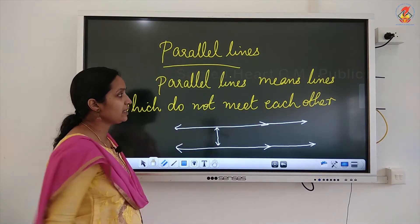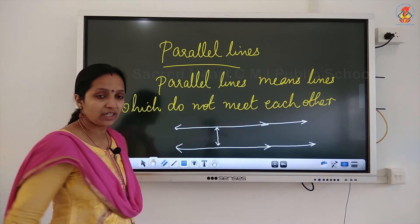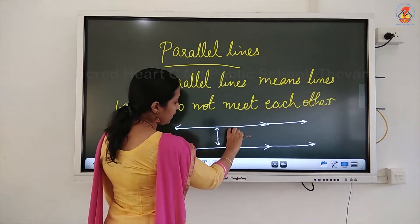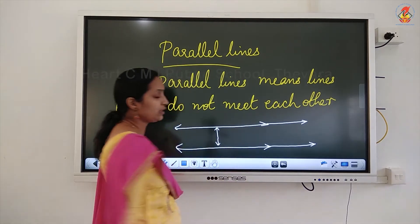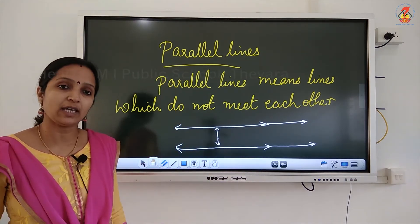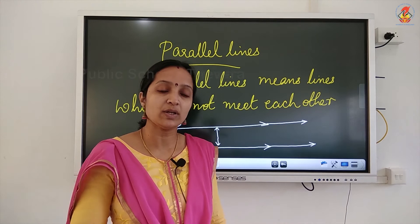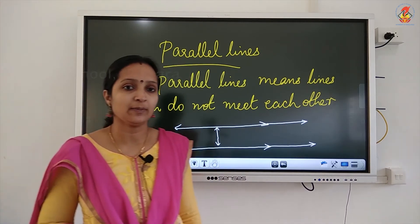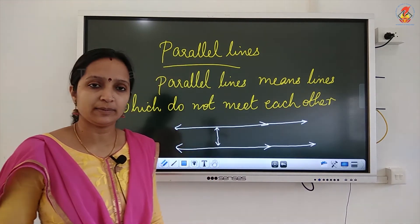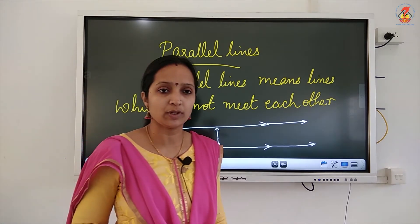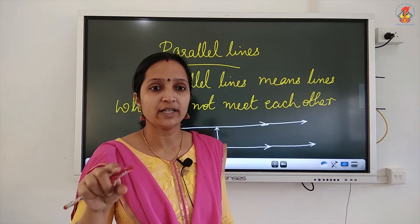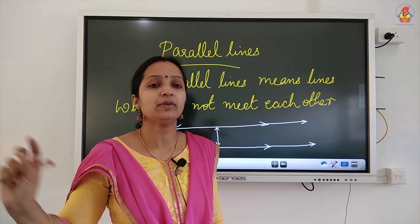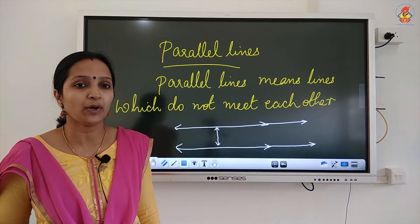So, parallel lines means lines which do not meet each other, and the distance between the two lines remains the same however far you extend them. For example, the lines in your ruled notebook — the gap between each line is the same, and if you extend them, they will not intersect at any point.